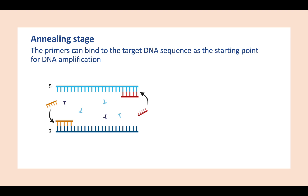Before going into much detail about gradient PCR, it is crucial to understand the annealing stage of standard PCR. In a standard PCR reaction, primers can bind to the target DNA sequence during the annealing stage, and this serves as the starting point for DNA amplification. This primer binding to the template DNA is dependent on the annealing temperature. Here we can see that both the forward and reverse primers are bound to our template DNA.